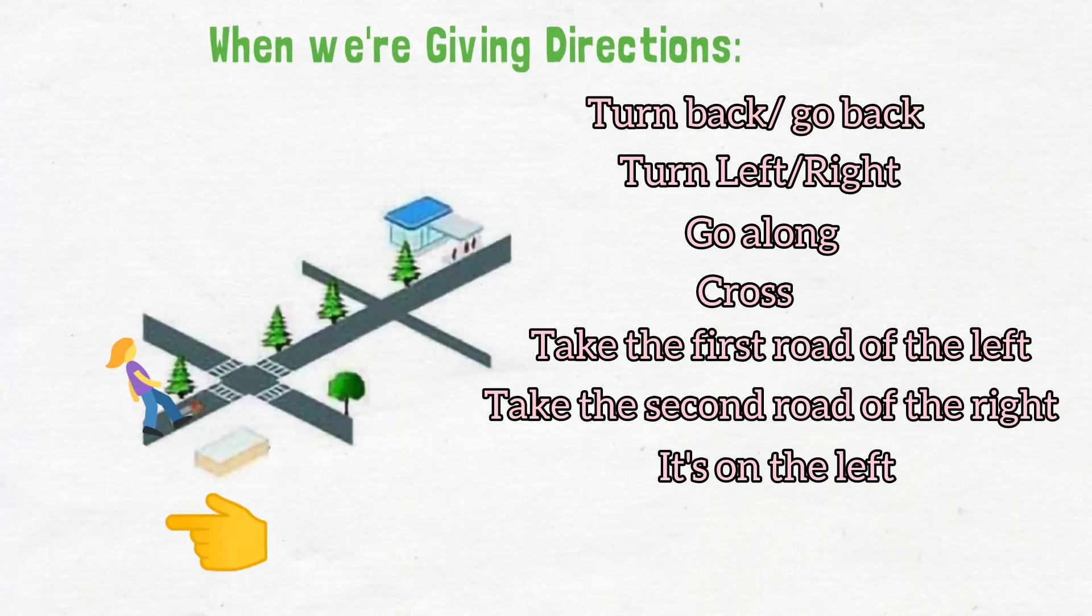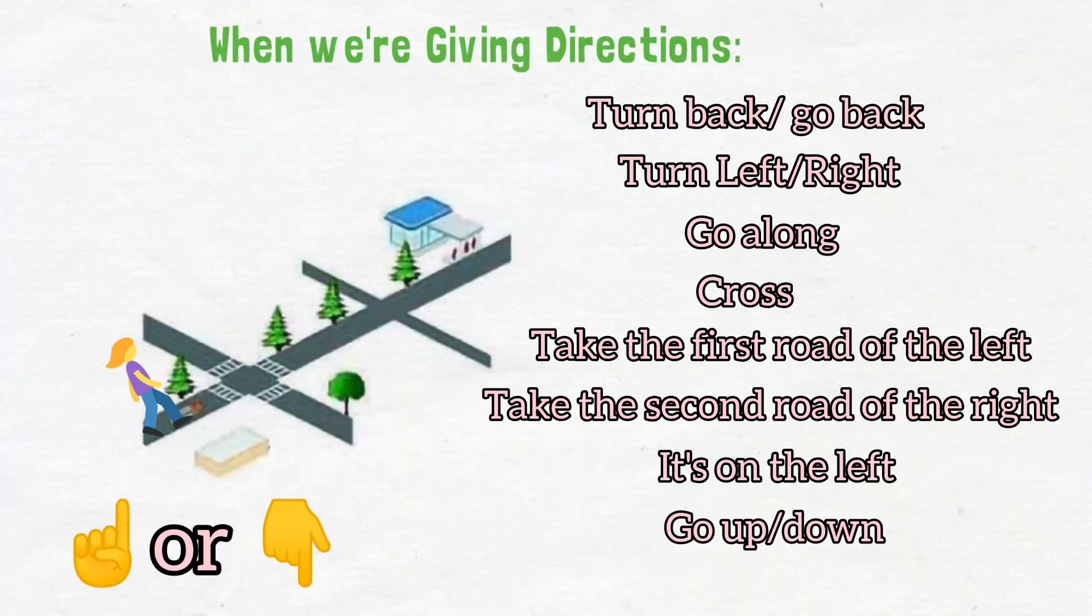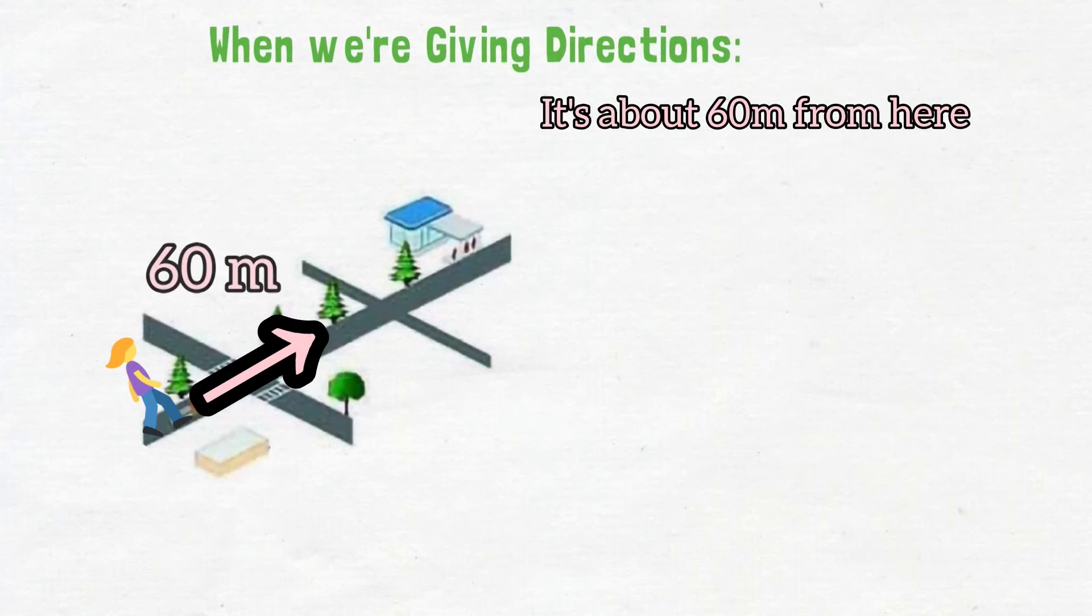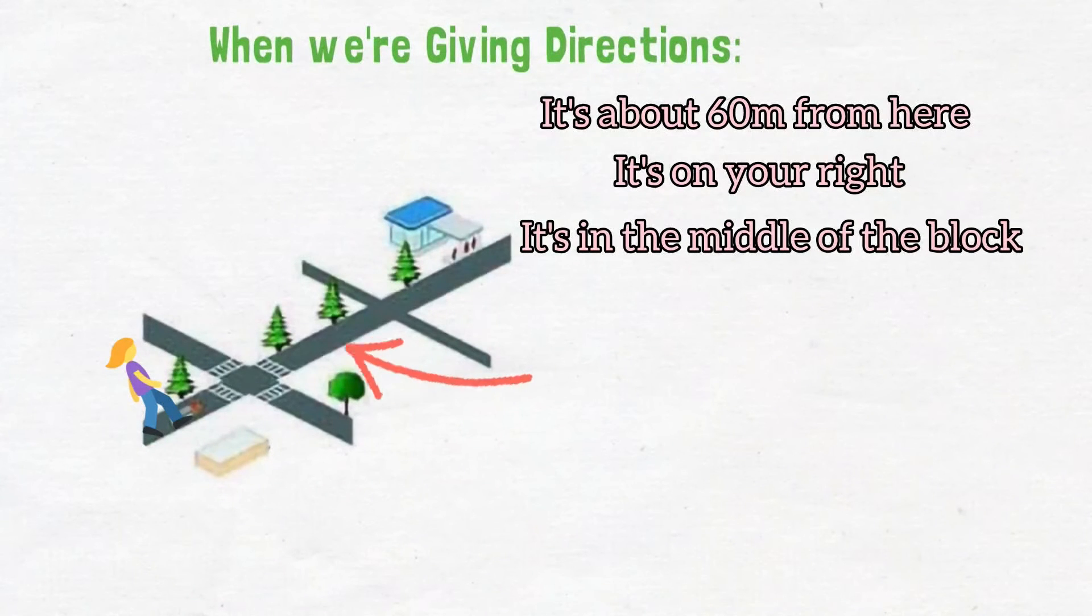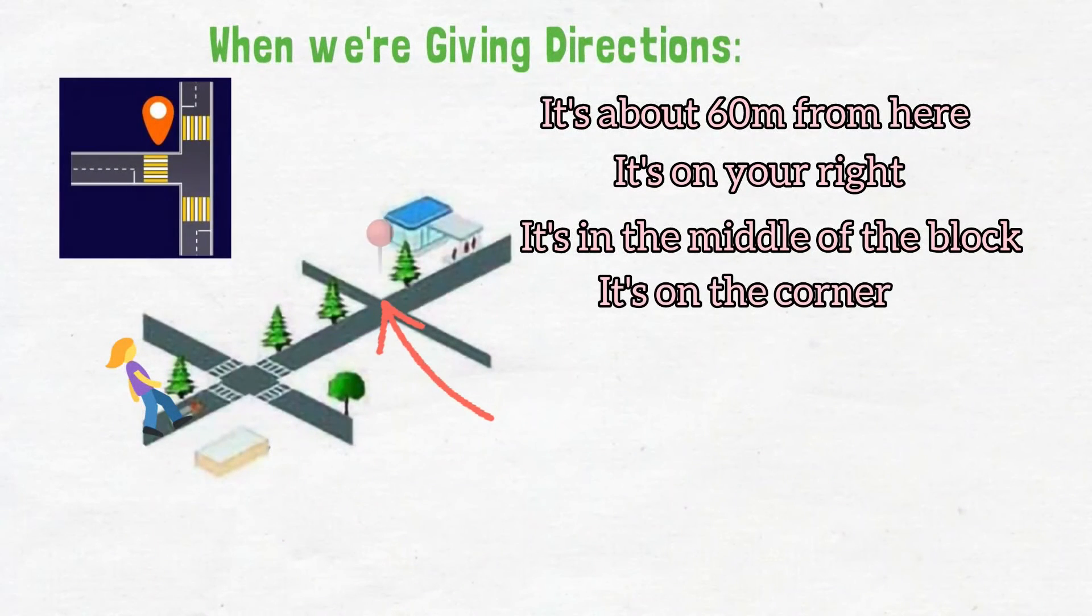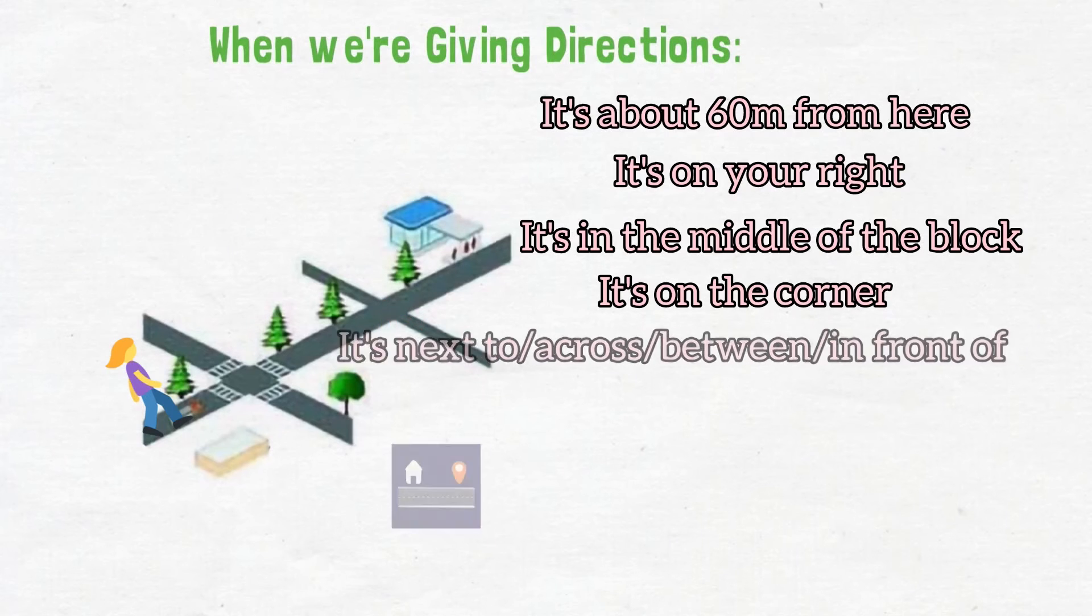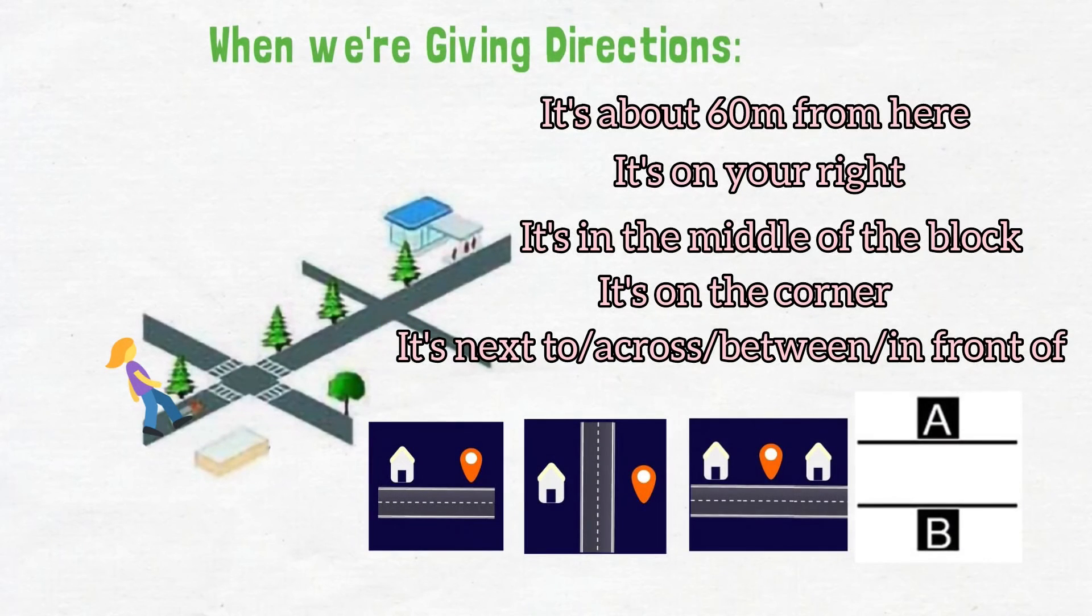It's on the left. Go up or down. It's about 60 meters from here. It's on your right. It's in the middle of the block. It's on the corner. It's next to, across, between, in front of.